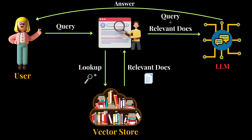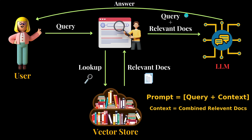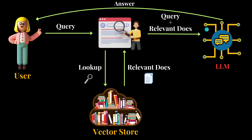Based on the matching embeddings, the relevant documents are retrieved. The vector store generally has embeddings of private documents along with information about those documents. A prompt is then generated using the original query and the relevant documents — the contents of all the relevant documents are combined to create a context that is given in that prompt. This new prompt, which has the query and relevant documents as context, is given to the LLM, which generates a more informed response.